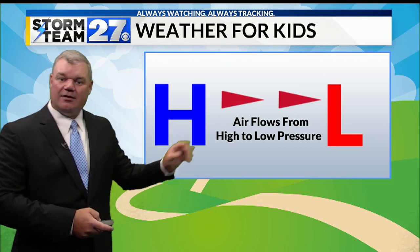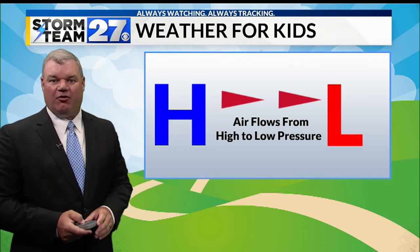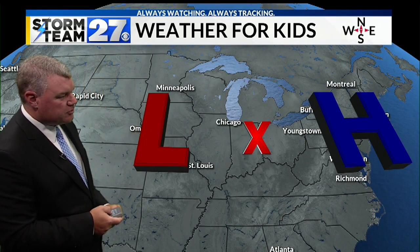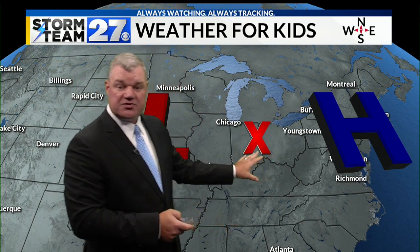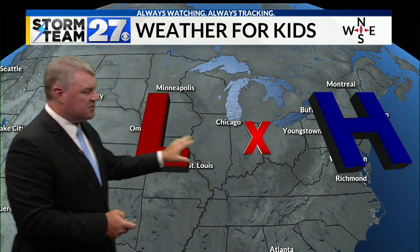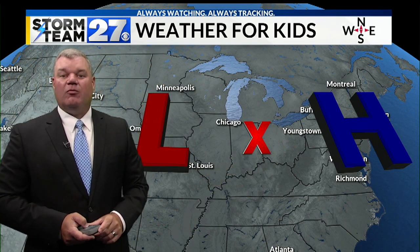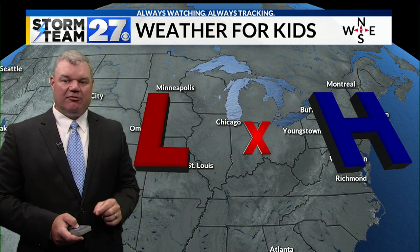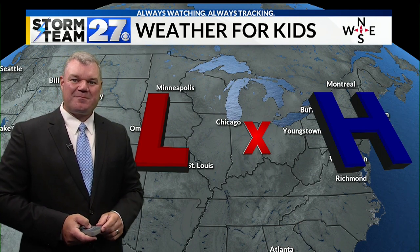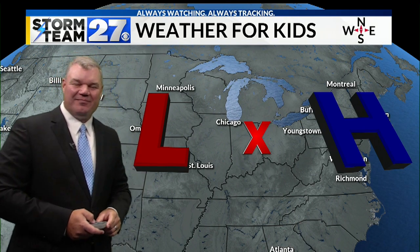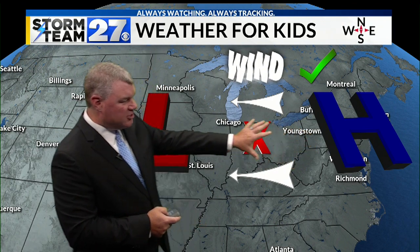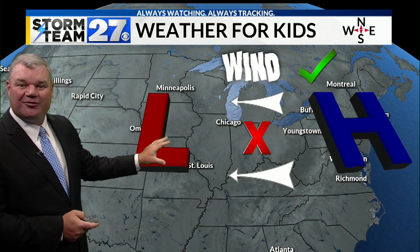Let's do another example. We know air flows from high to low pressure. Let's throw those H's and L's back on the map — this time they're turned around. I've put the L in the middle of the country and the H over on the east coast, with the X still in the same location. If the high is to the east and the low is to the west, what direction is the wind coming from? Is it from the north, south, east, or west? If you said the wind is coming from the east, you are correct — it's coming from the H heading toward the L, toward low pressure.